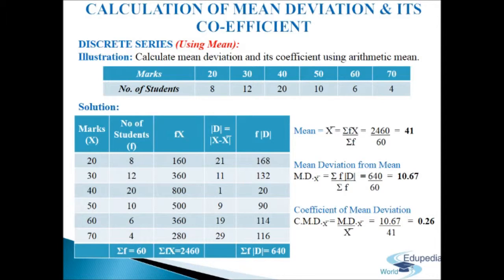Coefficient of mean deviation C·MD(mean) = MD(mean) / mean = 10.67 / 41 = 0.26. This is how we calculate mean deviation and its coefficient in discrete series.